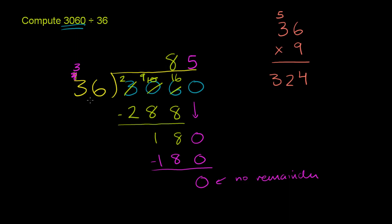So we're left with 36 goes into 3,060 85 times. So this is equal to 85.